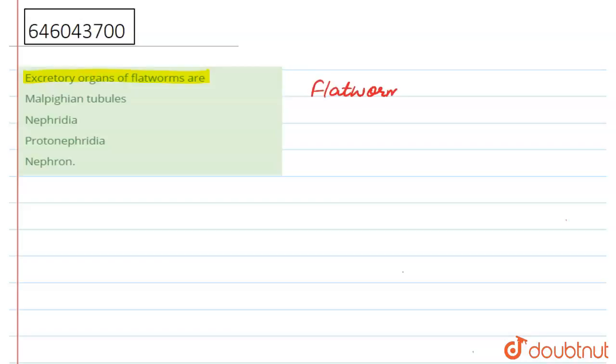Flatworms belong to phylum Platyhelminthes, where platy represents flat and helminthes means worms. In this question we're asking about the excretory organ.